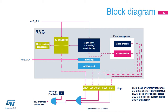Status bits are set and an interrupt is triggered if an abnormal sequence is detected in the seed or if the RNG frequency is too low. The RNG frequency error check must be disabled if the RNG clock is fixed below AHBCLK/32 — for example, for quality reasons.